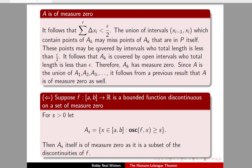The union of intervals which contain points of A sub k may miss the points of A sub k that are partition points within P itself. These points may be covered with intervals whose total length is less than epsilon over 2. It follows that A sub k is covered by open intervals whose total length is less than epsilon. Therefore A sub k has measure zero. Since A is the union of A_1, A_2, A_3, etc., it follows that A must be of measure zero itself.